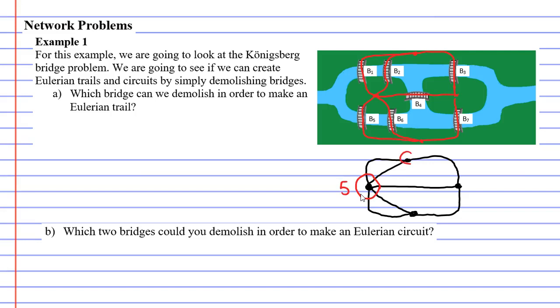So this vertex has a degree of 5, 3, 3, and 3. If we want to make an Eulerian trail, essentially what we need to do is make it so that only two of the vertices have an odd degree.